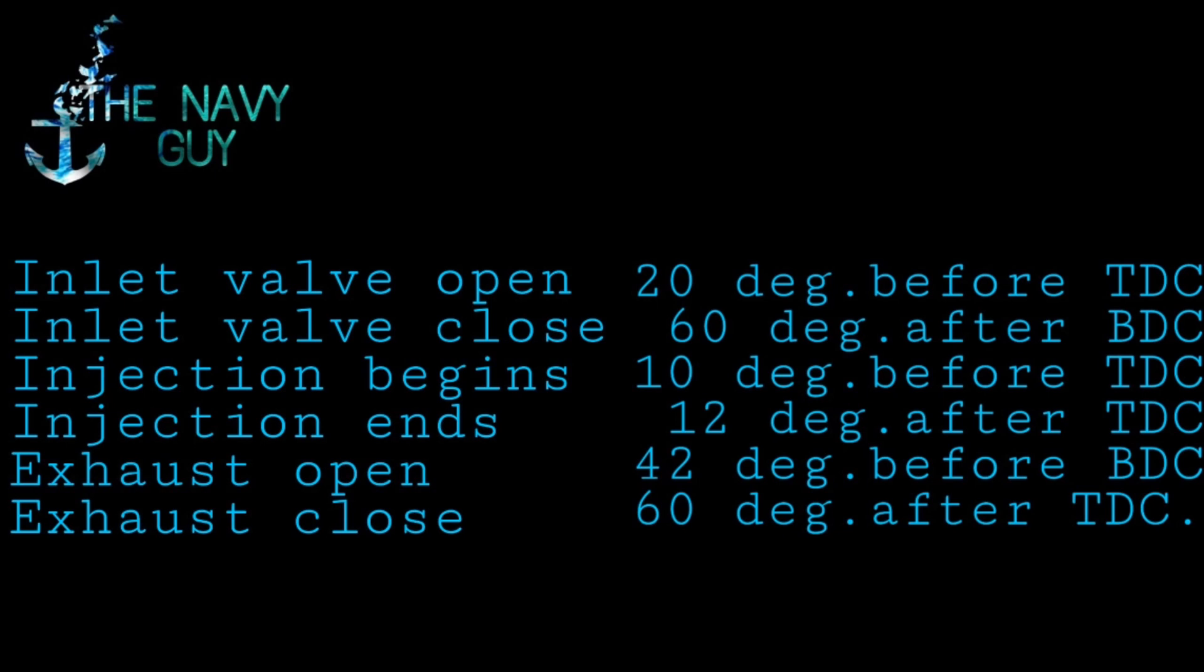An example of 4 stroke valve timing is as shown in the figure. Inlet valve opens 20 degrees before TDC and closes 60 degrees after BDC. Injection begins 10 degrees before TDC and ends 12 degrees after TDC. Exhaust opens 42 degrees before BDC and closes 60 degrees after TDC.